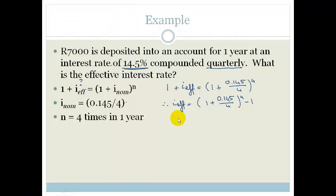So therefore this becomes i effective is 0.153. Therefore the effective interest rate is 15.3% per annum compounded. Okay, so now it's very easy to see how much money you'd have out at the end of the year.